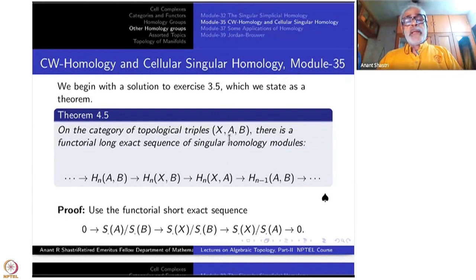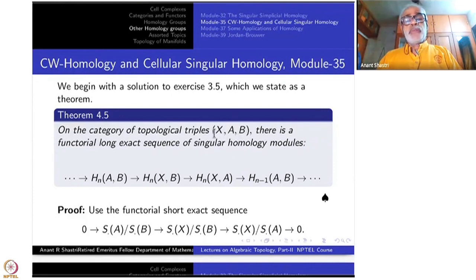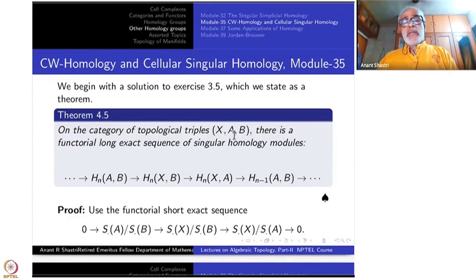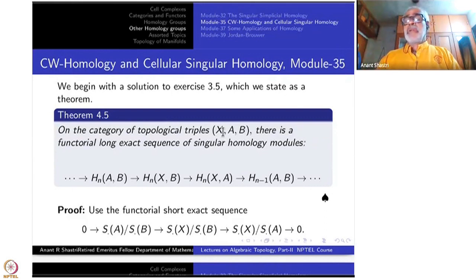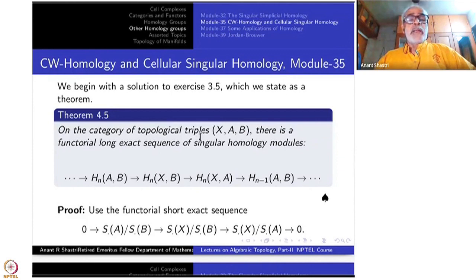Recall what a topological triple means: just like a topological pair consists of two spaces with A a subspace of X, here you take B as a subspace of A, which is itself a subspace of X. So X is a topological space and you are taking two nested subsets — X contains A contains B. This forms a category with morphisms being continuous functions: X to Y, A to A prime, and B to B prime correspondingly.